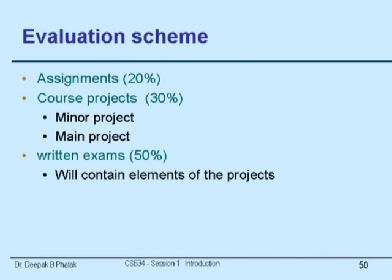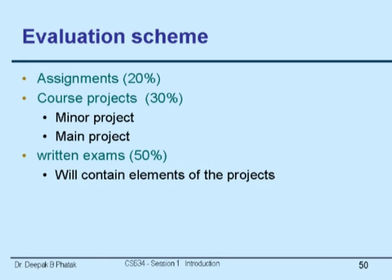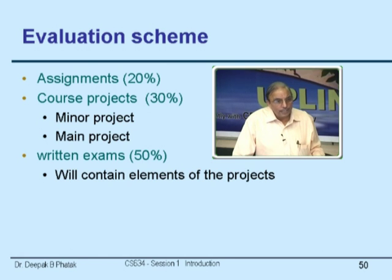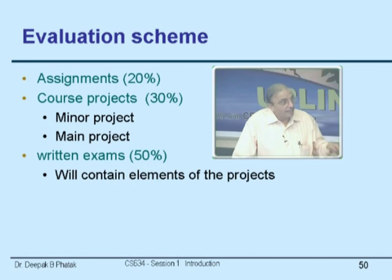The evaluation scheme tentatively: assignments constitute 20% weightage, course projects constitute 30% weightage. The project will have maximum weightage because that is where maximum learning happens in my experience. There will be a minor project and a main project — possibly combined as phase one and phase two. Then of course written exams as per the Senate mandate. To ensure practical work has a larger evaluation component, the final exam will contain elements of the projects as well — one question on your own project and one on another group's project.